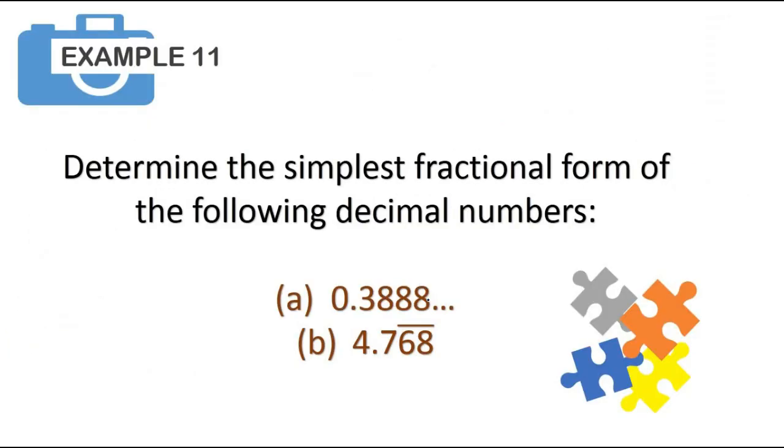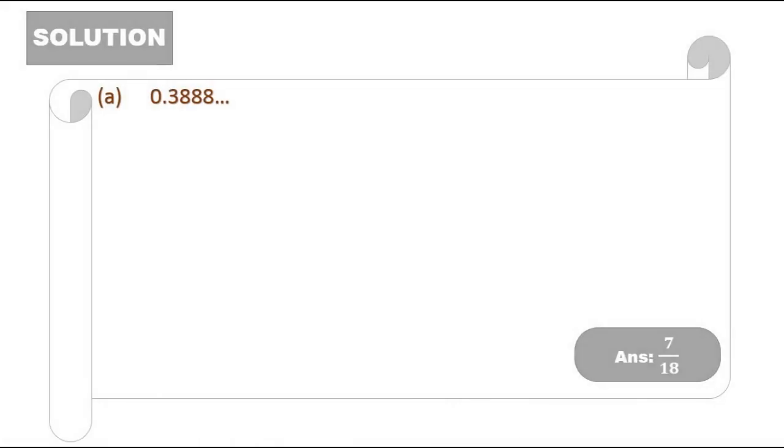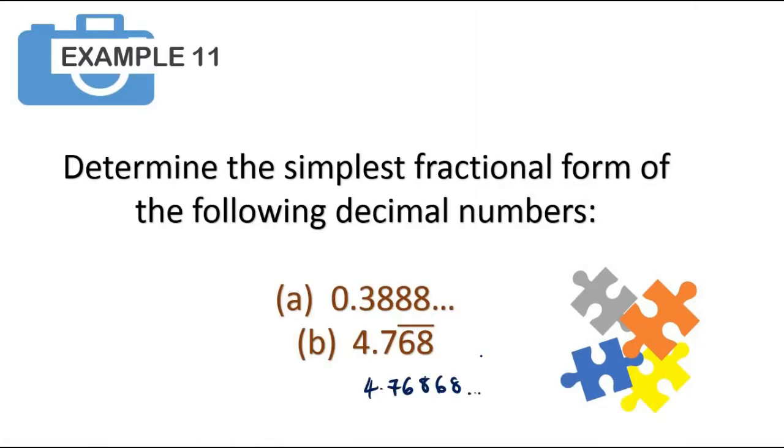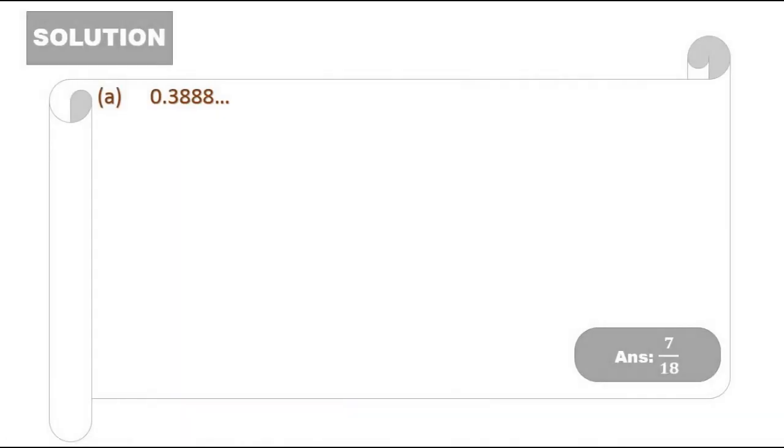What happens if we have to determine the simplest fractional form of the following decimal numbers? So let's say if you have repeated decimals like this with a period of 8 here, and period of 6 8 6 8. This one is actually 4.768 repeating and so on.